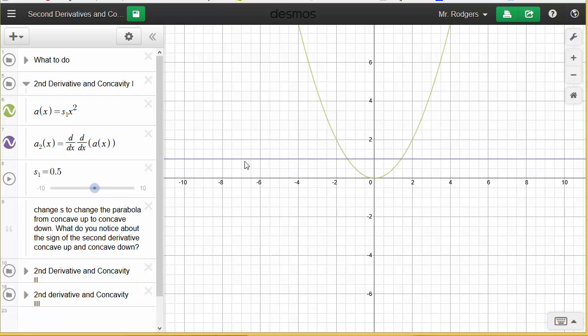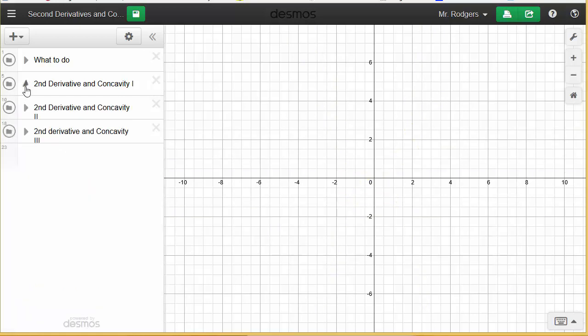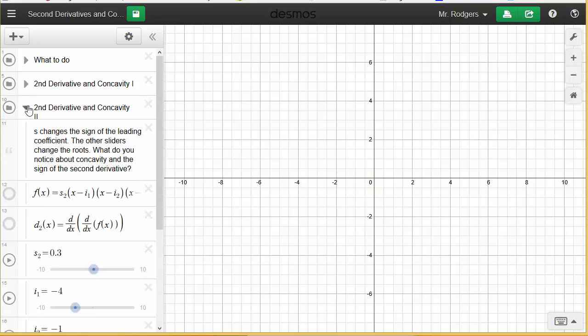It's taking the derivative twice. There it is in purple. I'm going to change this from concave up and notice the sign of the second derivative, and then change it to concave down. Once that's done, turn those off again so it doesn't get confusing, close that up, and then do the next one.